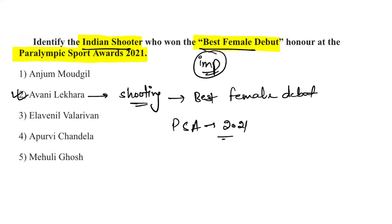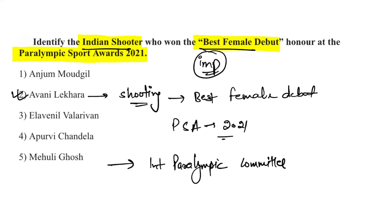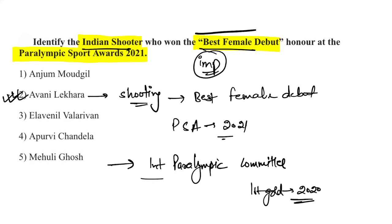The award was presented by the International Paralympic Committee. Avni Lekhara is the first Indian woman to win two Paralympic medals in a single edition of the Games, and won the first gold medal in shooting at the 2020 Tokyo Paralympics. She won the best female debut award at the 2021 Paralympic Sports Awards.